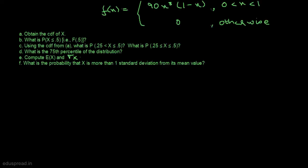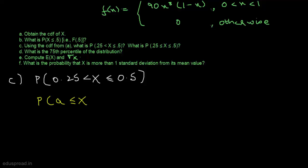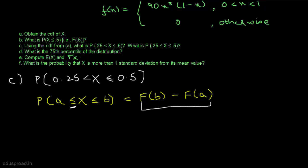Let's move to part C. In part C we have to calculate the probability that x is greater than 0.25 and less than or equal to 0.5, using the CDF found in part A. For a continuous random variable, we have the proposition that the probability x is between two values a and b equals F of b minus F of a. Because this is a continuous random variable, the probability with a strict inequality equals that with a non-strict inequality — it's one and the same thing.